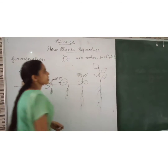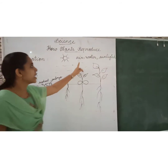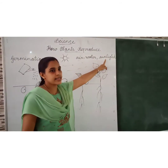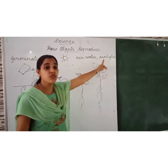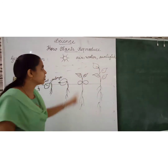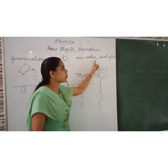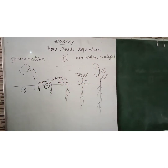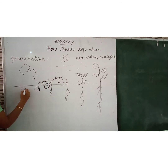Air, water and sunlight — sunlight means warmth. We have already studied about warmth. The first stage: we should keep the seed in the soil.